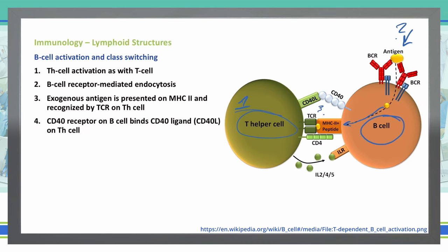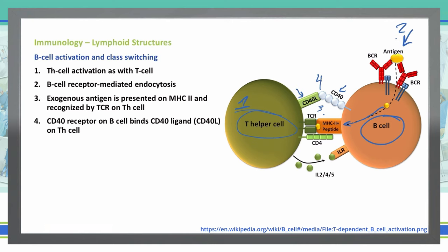Step four: our CD40 receptor on the B cell, which is over here on the right in white, is going to bind the CD40 ligand on the T helper cell, which is the green square structure on the left. So step four is where we have that binding of the CD40 receptor and the CD40 ligand between the T helper cell and the B cell.